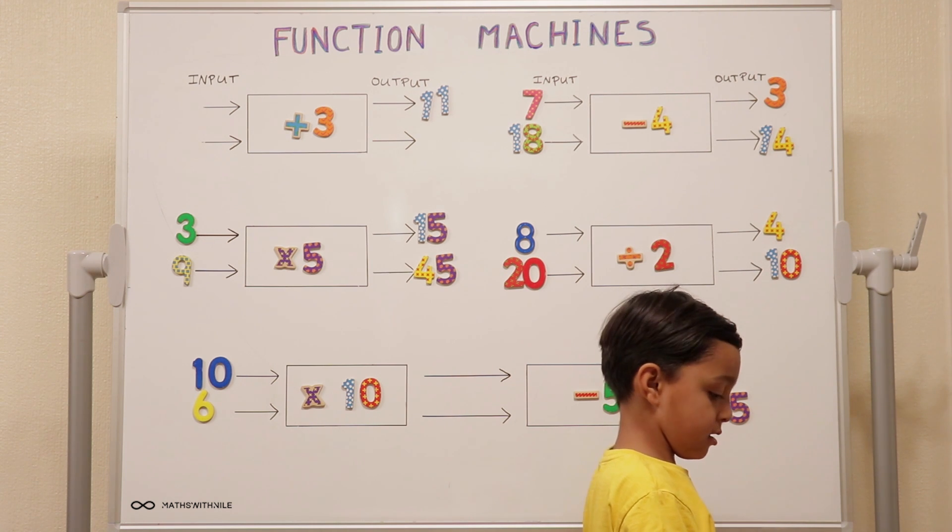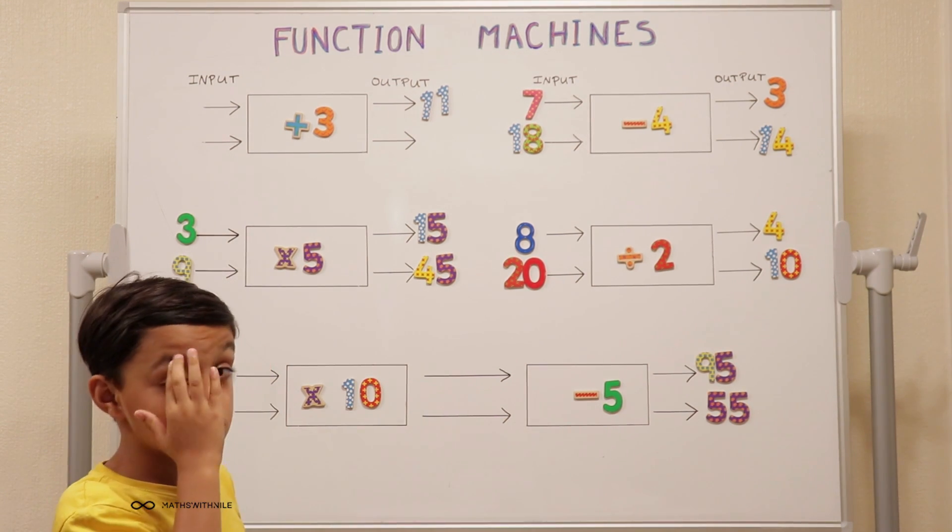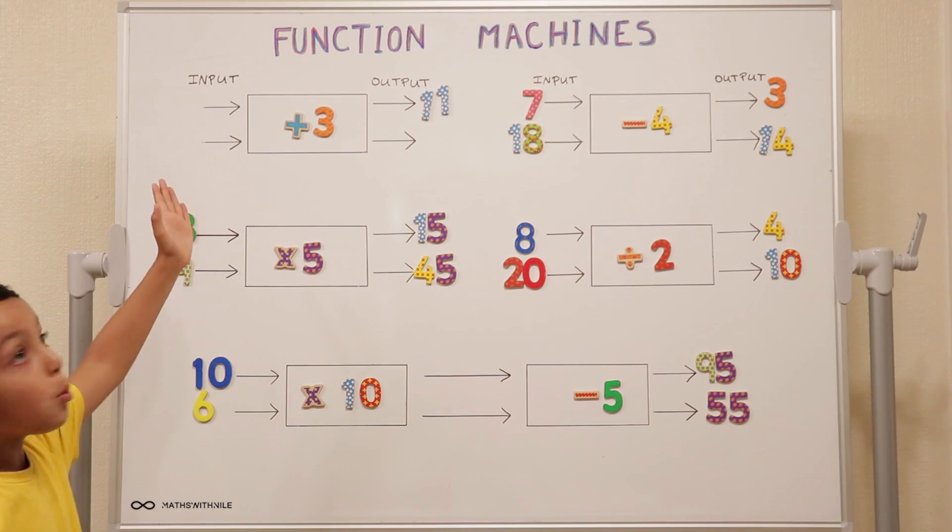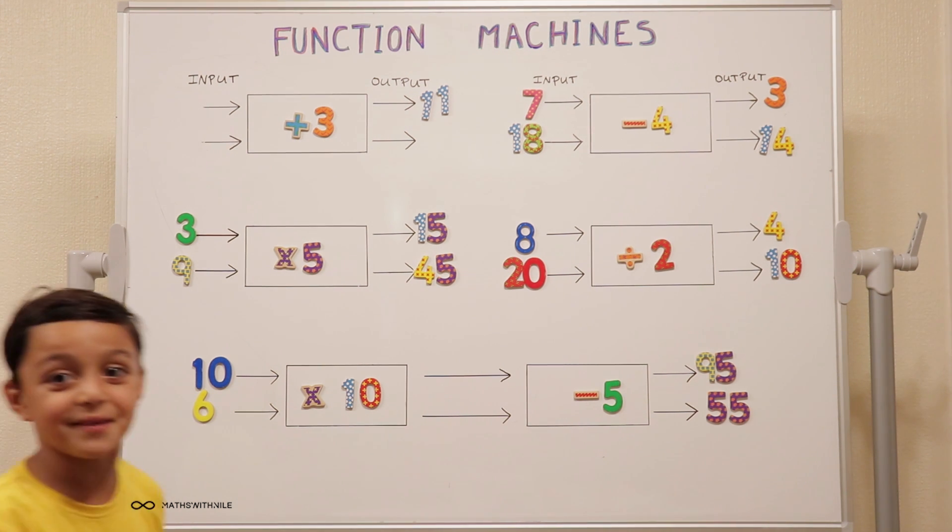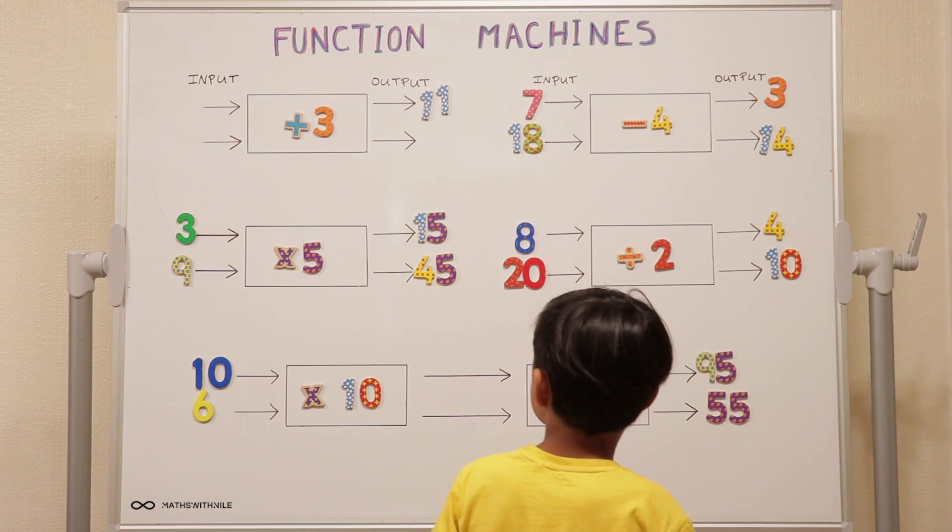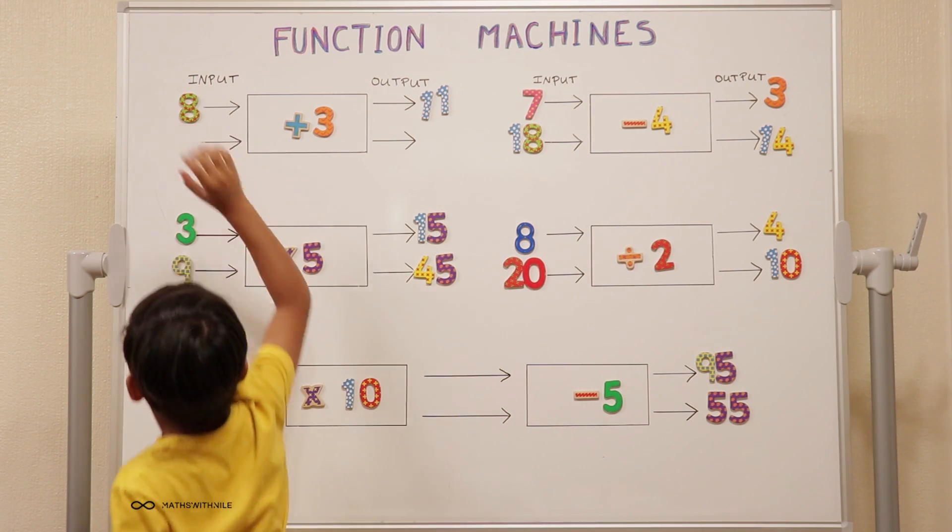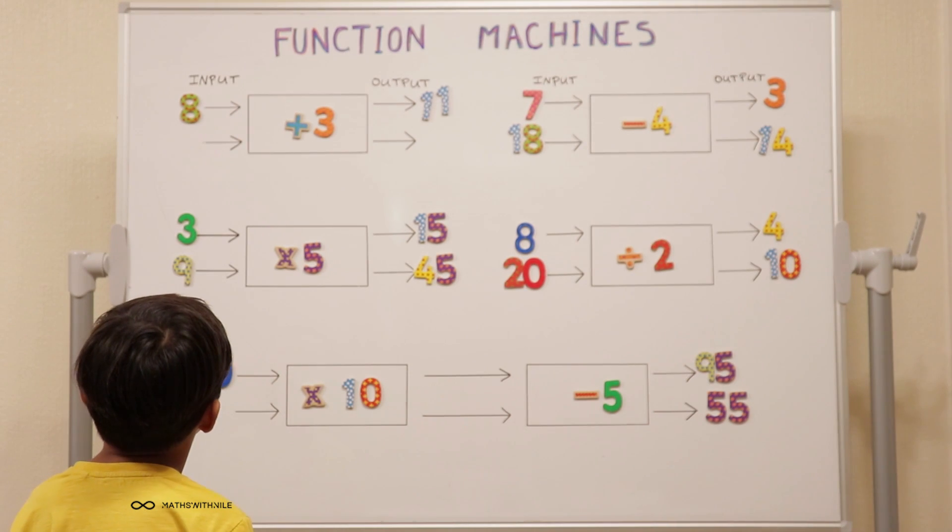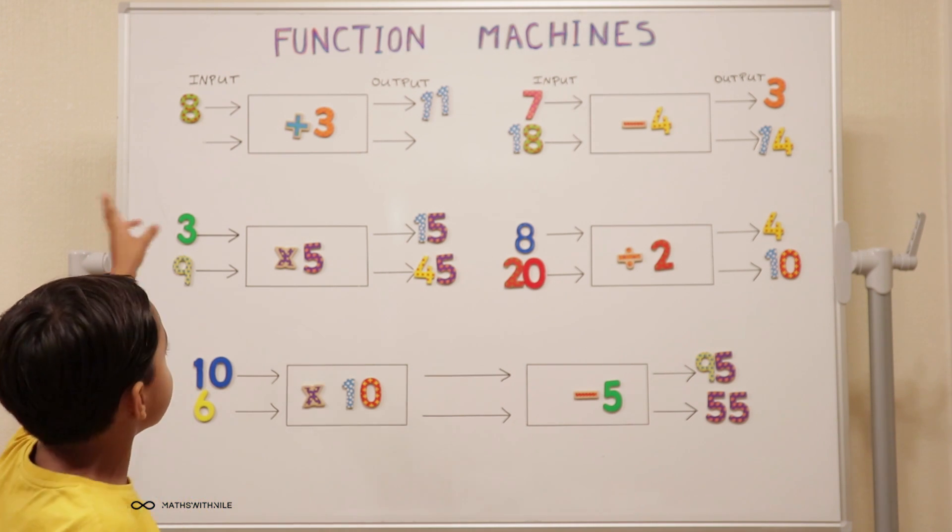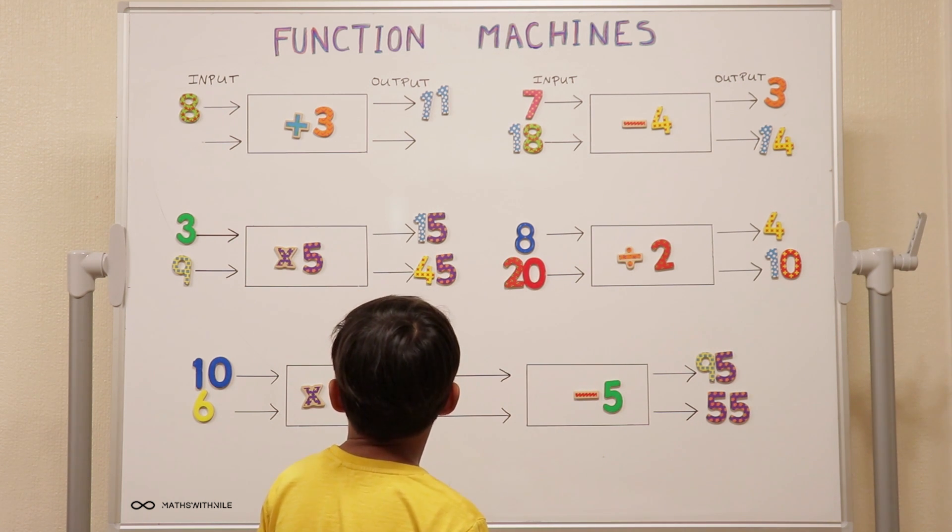So what information is given there in that function machine? The answer. What's the answer called? The output. And what else is given? There's plus three. The rule. So take away three. Eleven take away three. Eleven, ten, nine, eight. So the input would be eight. Very good. And you can, how can you check it now to make sure that it's right? You can start with the eight. Eight plus three. Eight, nine, ten, eleven. Very good. So you've done subtraction as the inverse operation.